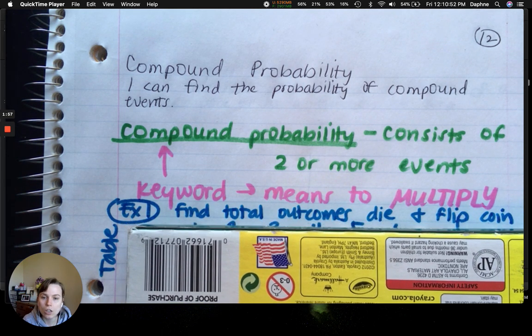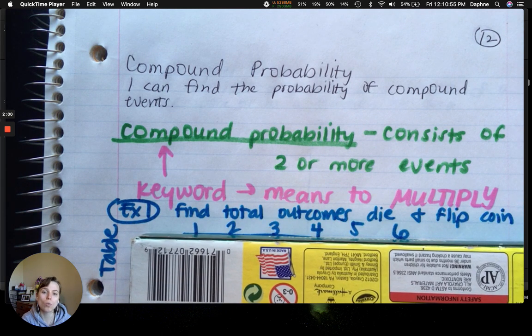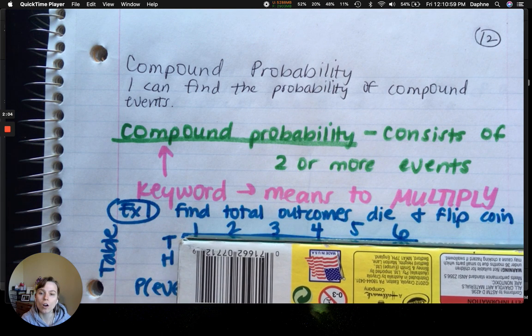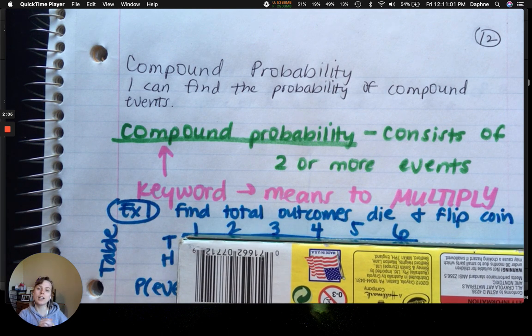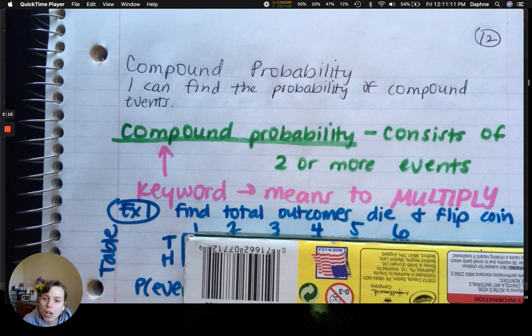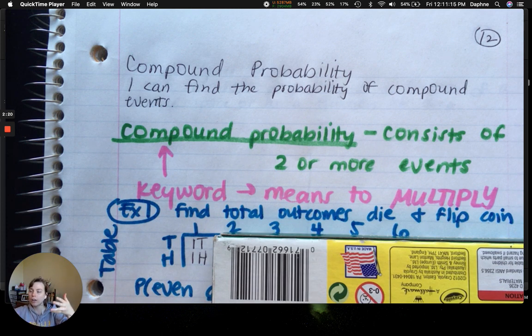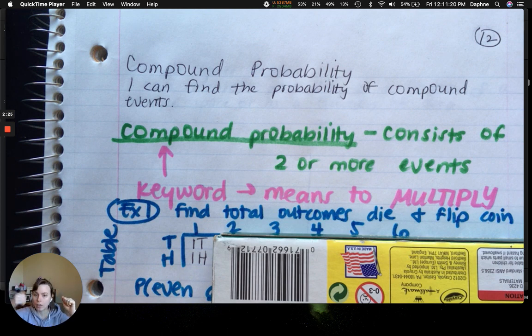Alright. So, on the top of your table, I want you to put the numbers 1, 2, 3, 4, 5, 6 to represent our die. And then on the side, put tails and heads, T and H. Typically, you're going to see just T and H to represent tails and heads. And then as you work through your table, go through and list them out. So if I roll a 1, but I flip a tails, my outcome is called 1T. I got a 1 and I have a tails. And again, if I flip a heads, I have 1 and a heads. So fill out the rest of the table.